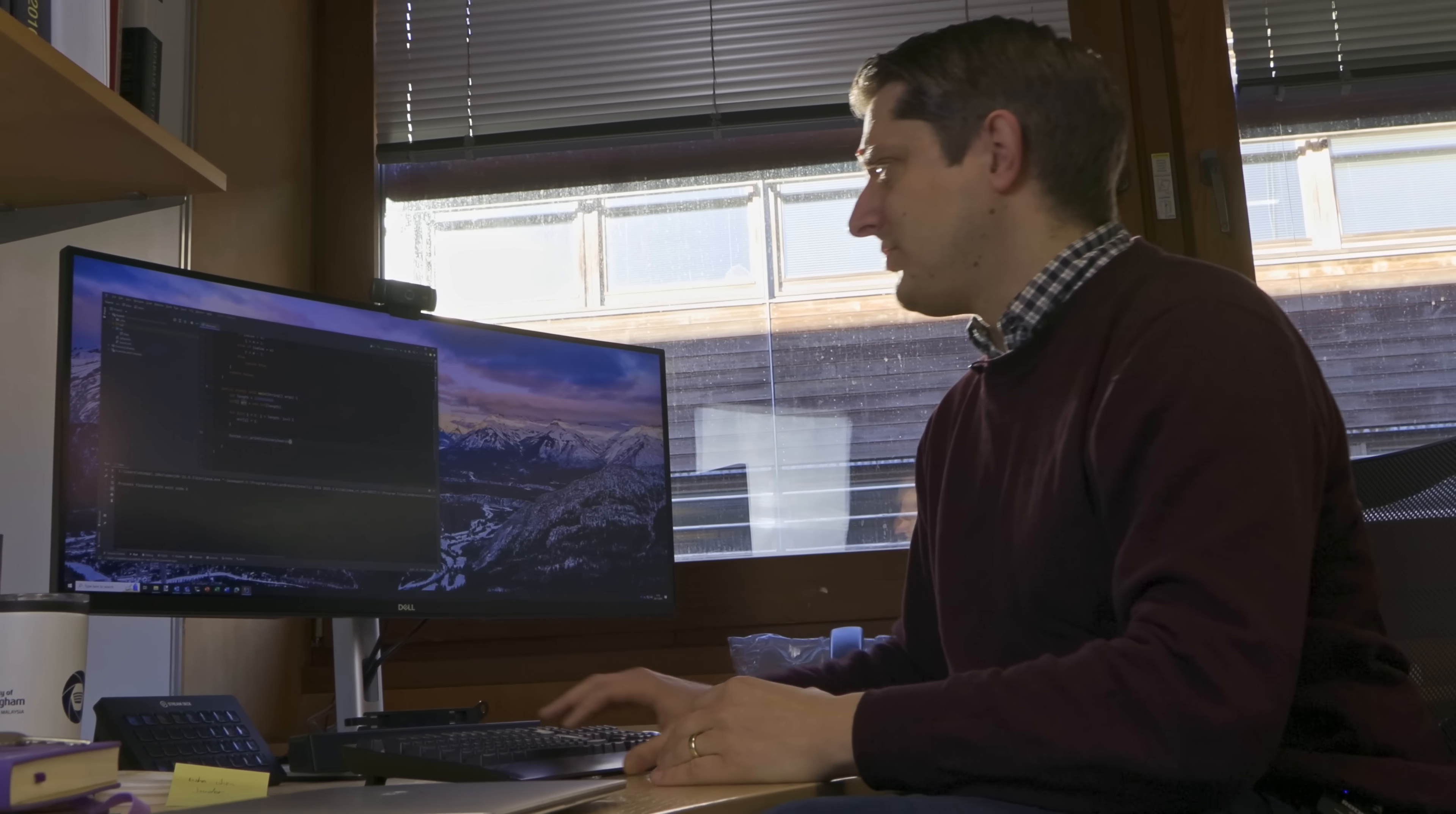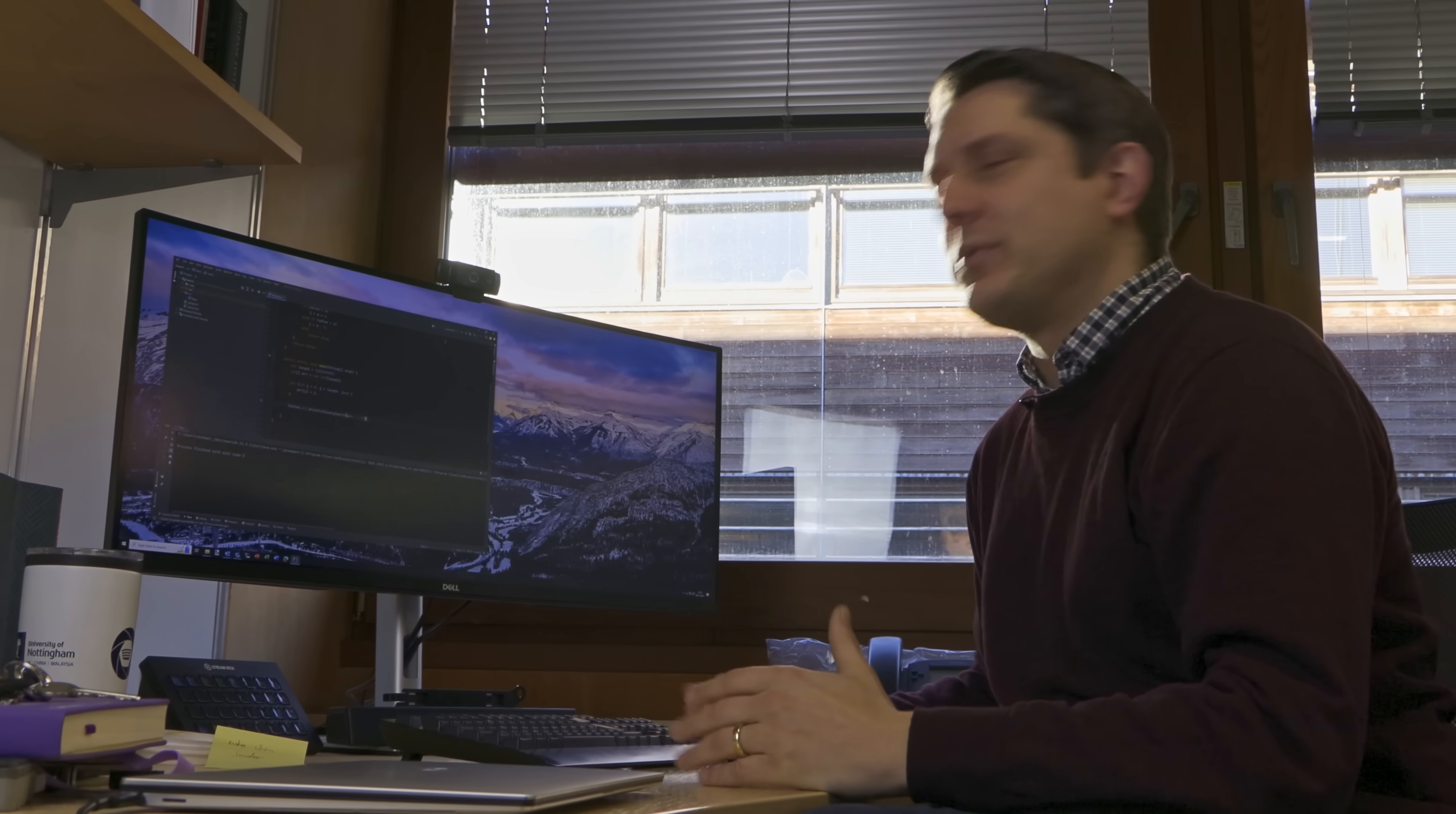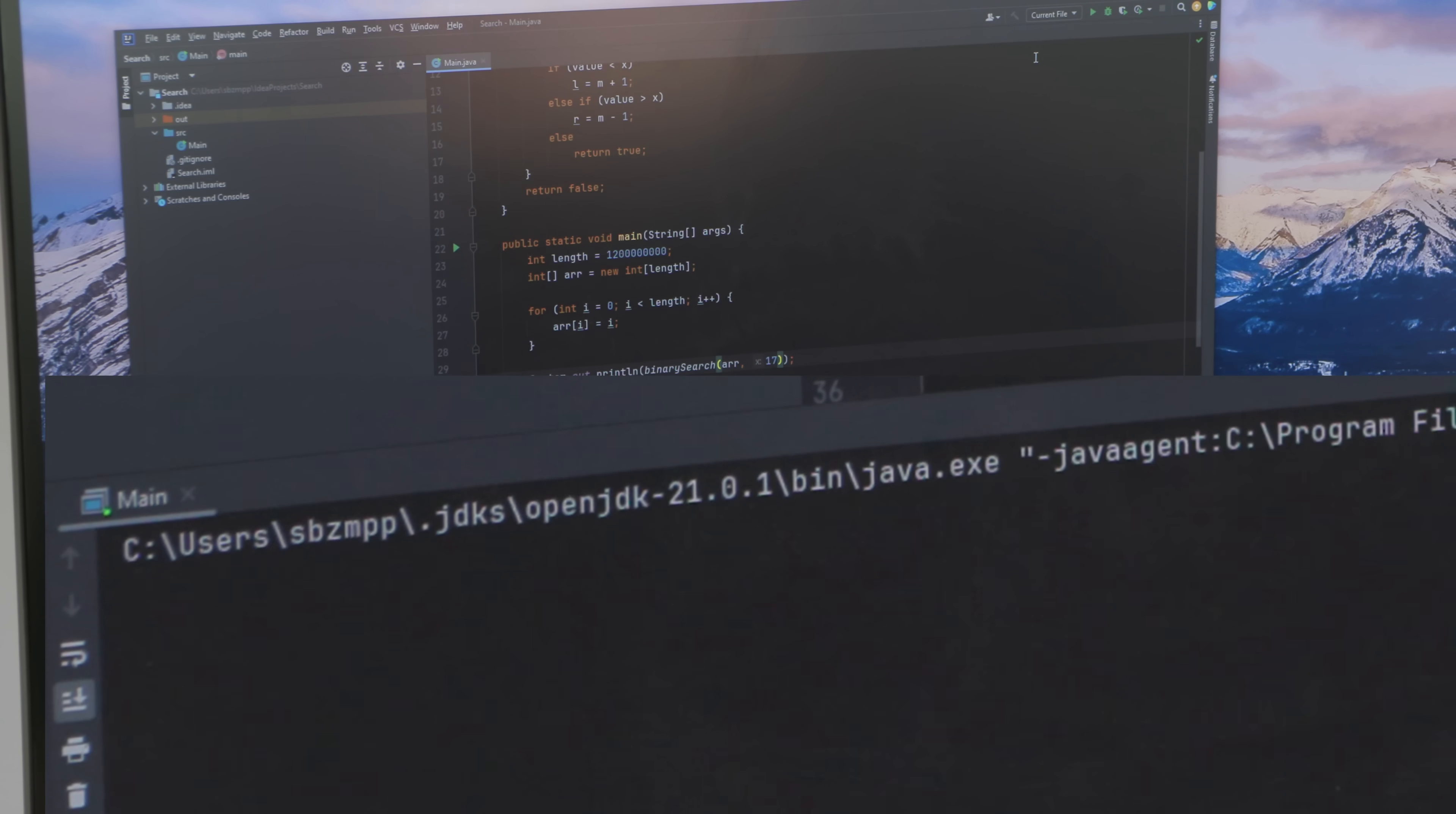So, if I output binary search of, let's say, using our array, and we're going to search for the number 17, which we know is in the array because 17 again. I don't think there's any real actual significance of the number 17. So, if we run this, what should happen is it prints out true, because we can find the number. And it does. Good.